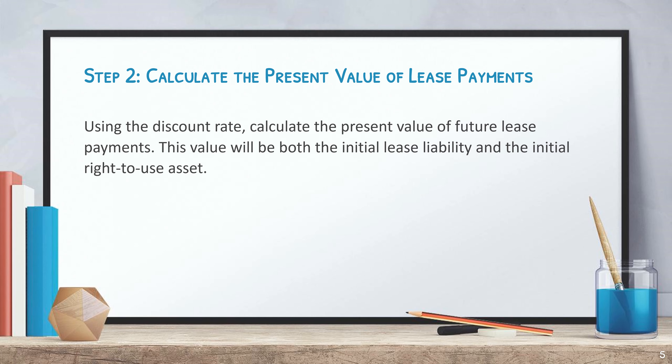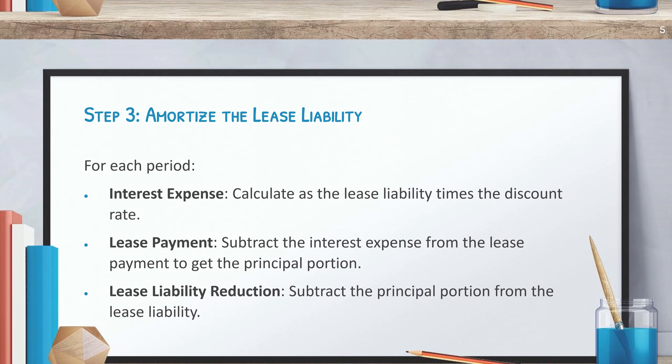Step two: calculate the present value of lease payments. Using the discount rate, calculate the present value of future lease payments. This value will be both the initial lease liability and the initial right-to-use asset.